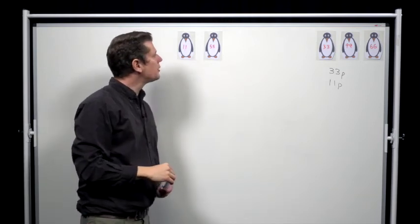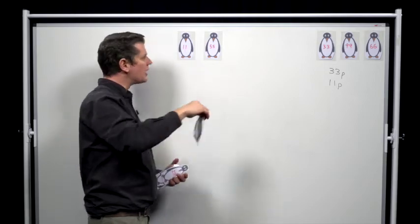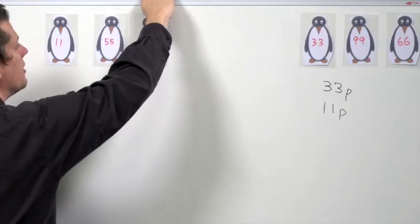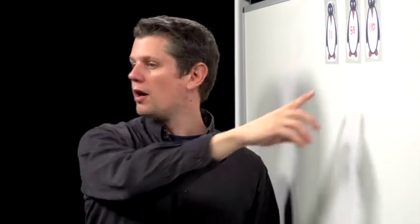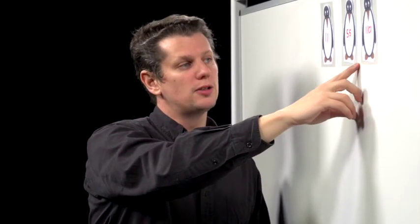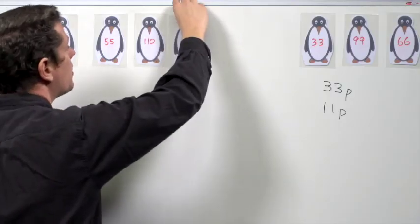Then the first penguin to join immediately behind 55 is penguin 110. Other penguins might join behind 55, but they'll be doing so later, so they'll be in here. Similarly, the first penguin to join immediately behind 110 is penguin 220.